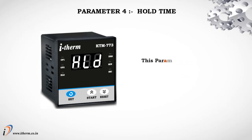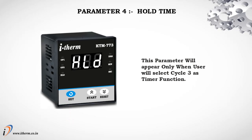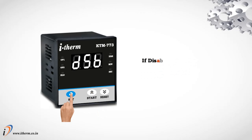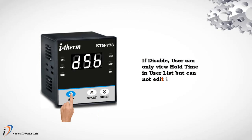Parameter 4: Hold Time. This parameter will appear only when the user selects Cycle 3 as timer function. If enabled, the user can view and edit hold time in the user list. If disabled, the user can only view hold time in the user list but cannot edit it.